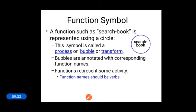The second symbol is a circle, used to represent a process or function. For example, the function 'search book' is represented by drawing a circle and annotating it with the function name, so you know what that function is performing. This circle is also called a process symbol, bubble symbol, or transform symbol. Generally, function names represent some activity and should be verbs.